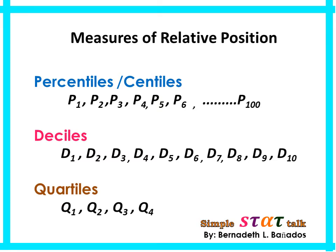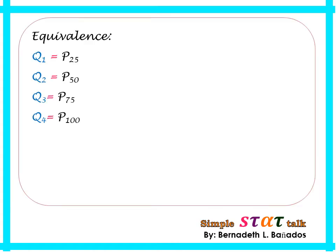Quartiles divide the data set into four equal parts. So if we have Q sub 3, that means we are referring to the third quartile. If we have Q sub 2, that means we are referring to the second quartile. Now let me share the equivalent values for quartiles and percentiles.